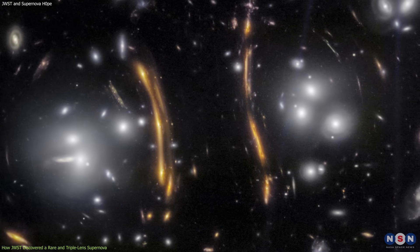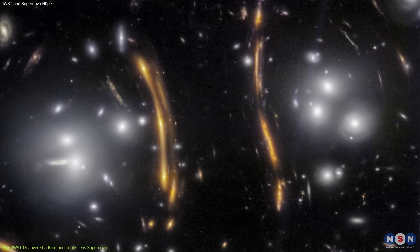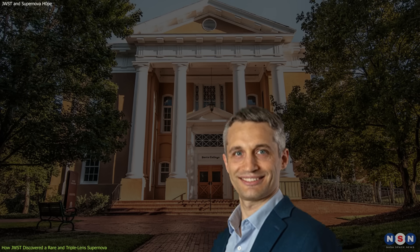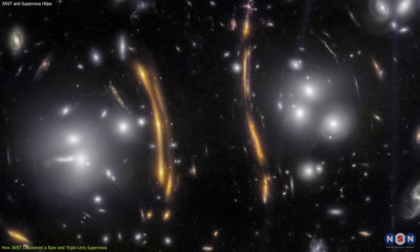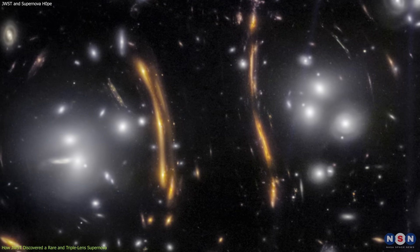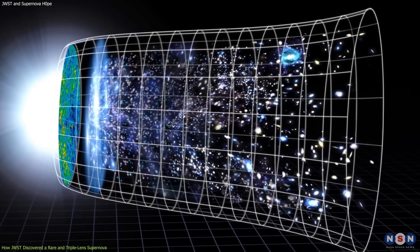This triple-lens supernova was named Supernova Hope by its discoverers, who were part of an international team of astronomers led by Dr. Steven Rodney from the University of South Carolina. The name Hope refers to both Hope and H0, which is the symbol for the Hubble constant, which measures the expansion rate of the universe.